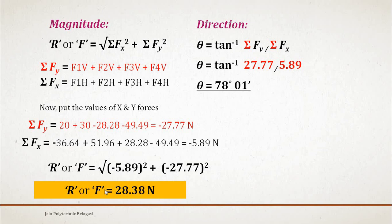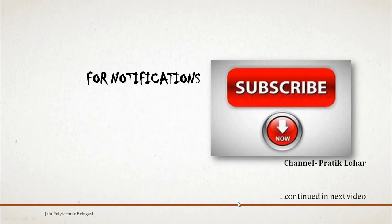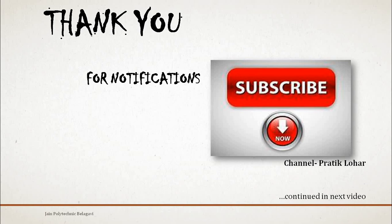The resultant force of 28.38 N acts in the third quadrant at 78° 0.01'. If you apply a single force of 28.38 N in that direction, it produces the same effect as all four forces F1, F2, F3, and F4 combined. Thank you students. Subscribe the channel for further upcoming videos.